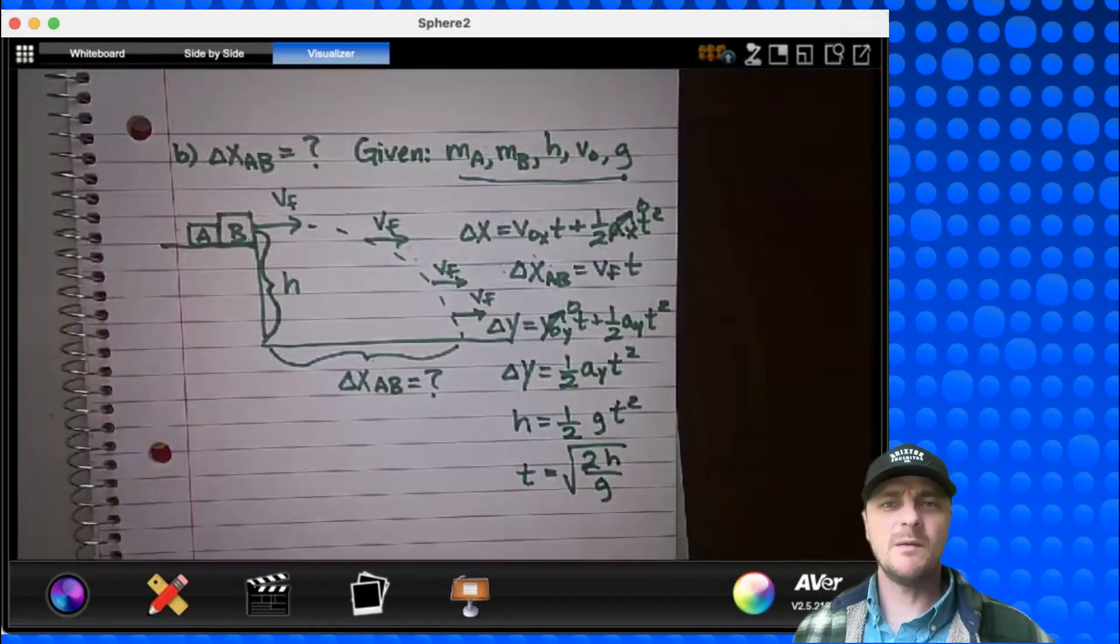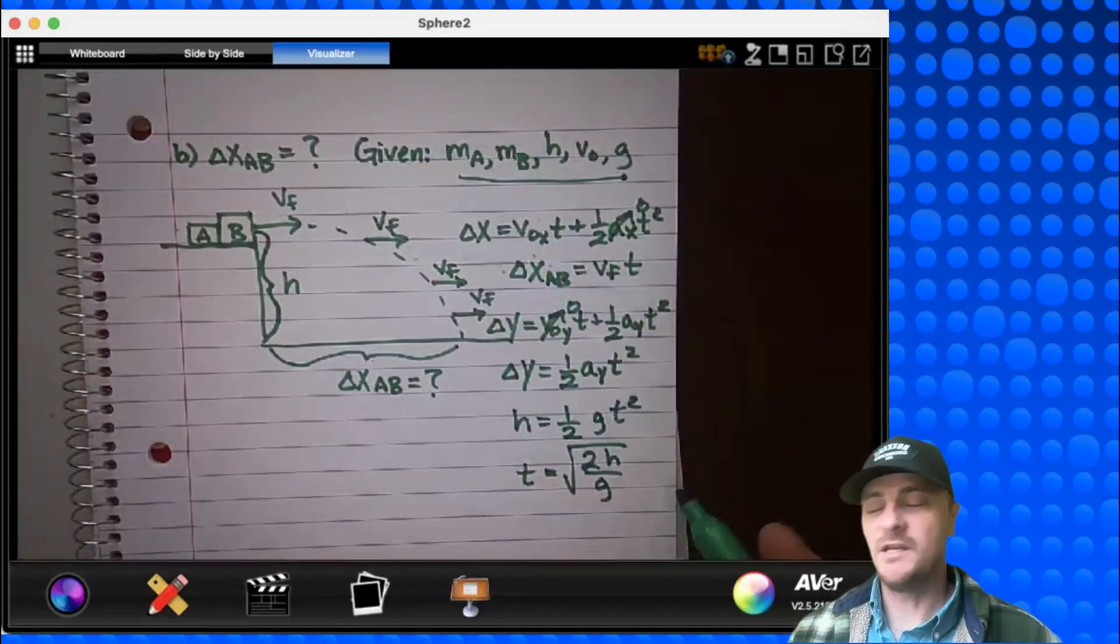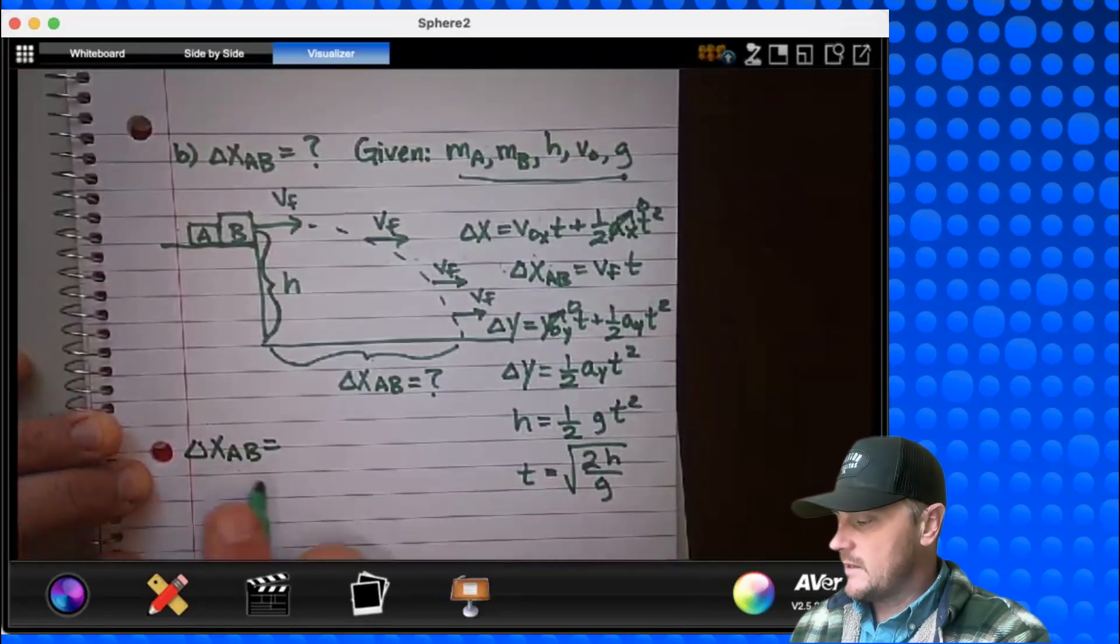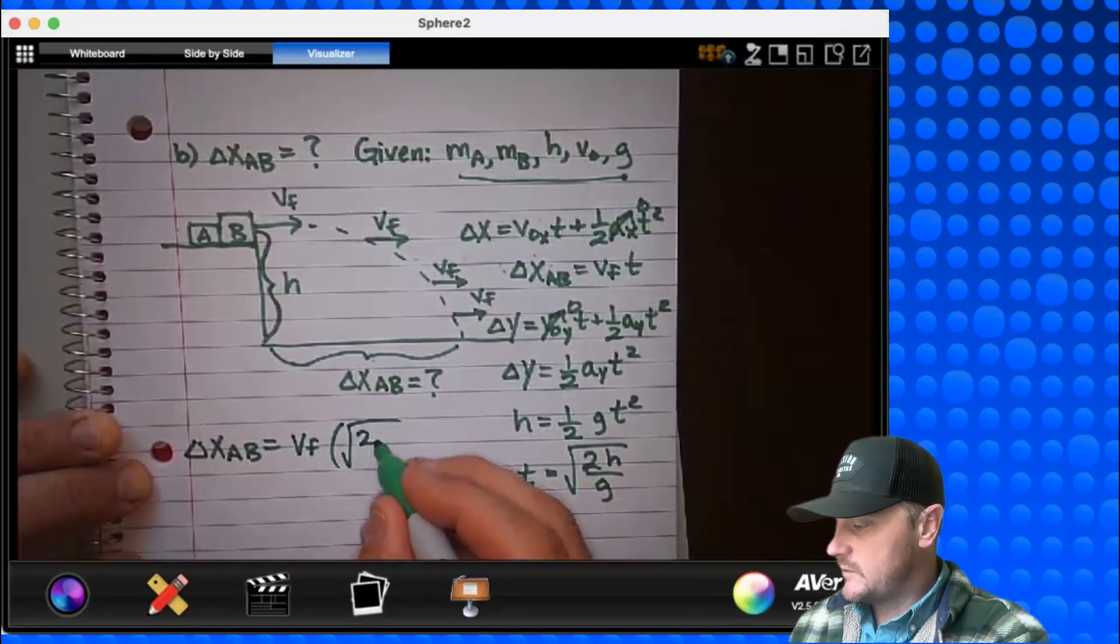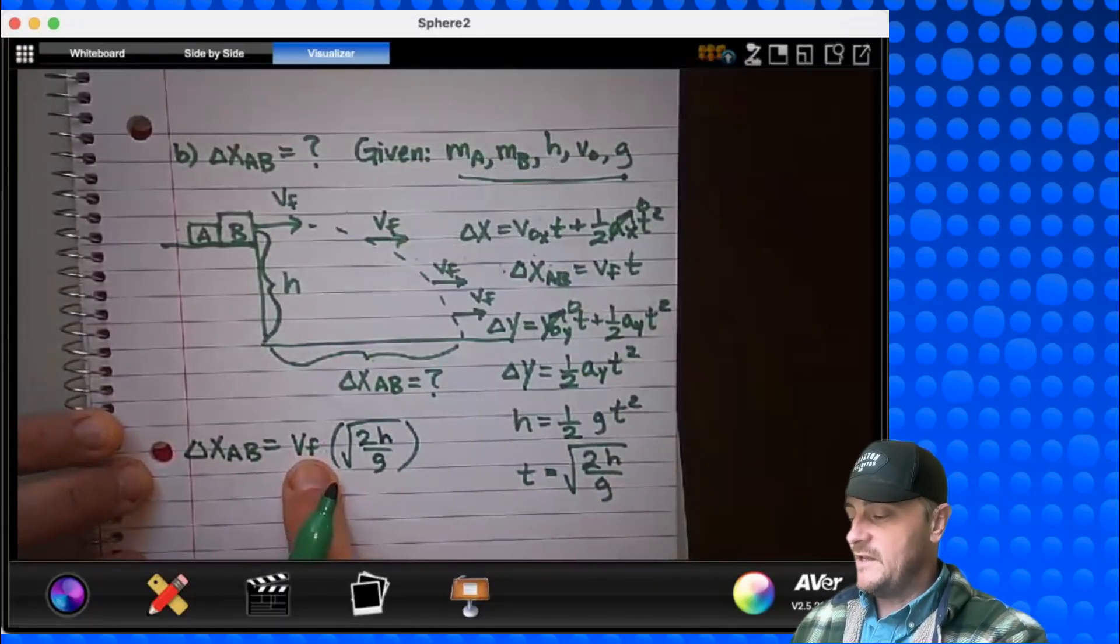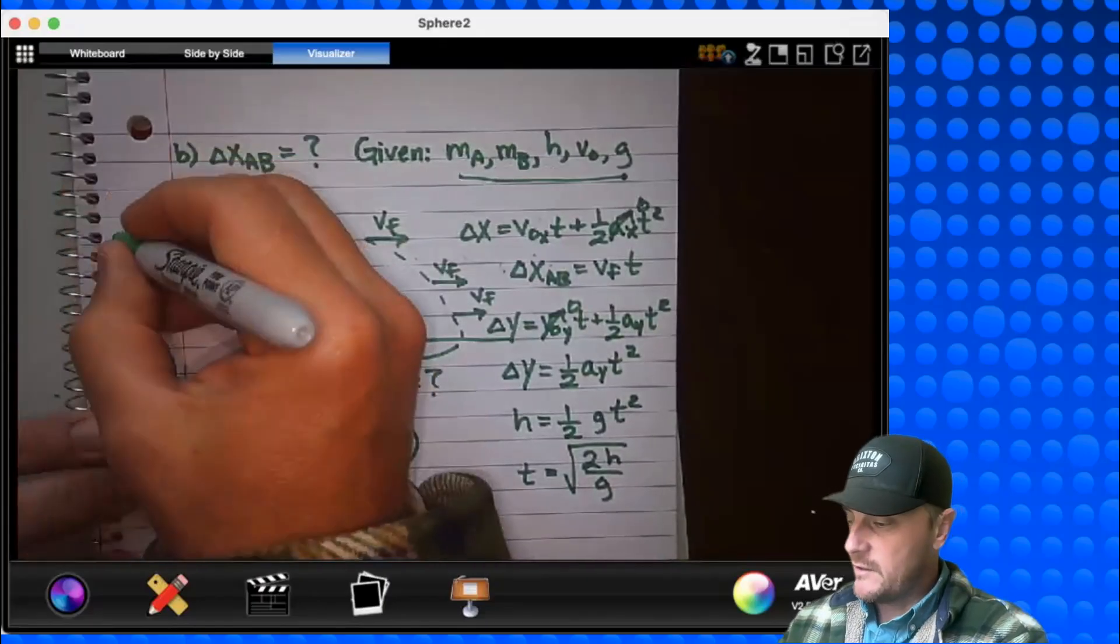Now if you're thinking, what happened to the negatives? Well, technically you're displacing a negative H, and G is negative, so your negatives would just cancel out. So if I re-express this for delta XAB, I get VF times, look at that, square root of 2H over G. Awesome. But I still have to get VF out of there, so let's do that now by using the conservation of momentum.